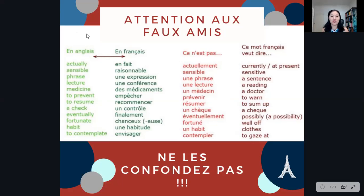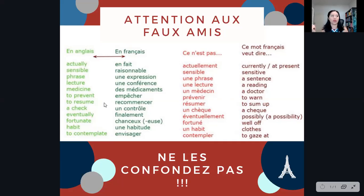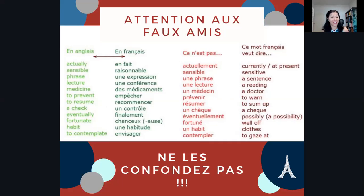En anglais, the word 'a check' — en français, c'est 'un contrôle.' Ce n'est pas 'un chèque.' We do have 'un chèque' — it's a check, but as in a bank cheque. For something like an inventory check or a passport check, that will be 'un contrôle.' 'Un chèque' is a bank cheque — note that US and UK spelling will differ.